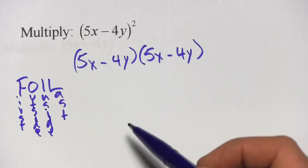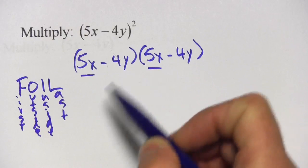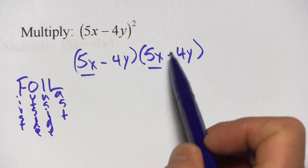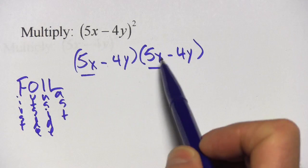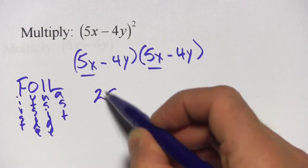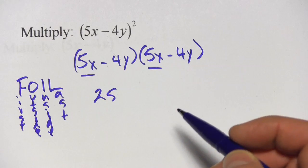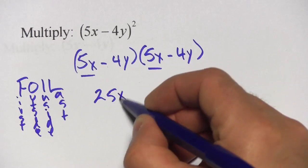So let's see how this goes. First, I want to multiply the first terms. Well, the first term in each polynomial is 5x. So this is going to be 5x times 5x. Because there is a number and a variable, we do this kind of in two steps. 5 times 5 is 25. And x times x, well, something times itself is that thing squared. So x times x is x squared.